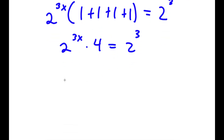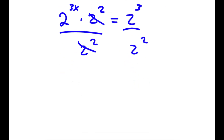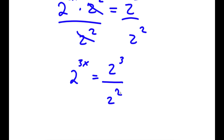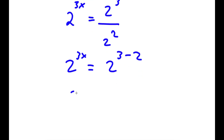Now, 4 is the same thing as 2 squared, and I can divide both sides by 2 squared. These two cancel out, so now I have 2 to the power of 3x is equal to 2 to the power of 3 over 2 to the power of 2. And 2 to the power of 3 divided by 2 to the power of 2 is equal to 2 to the power of 3 minus 2, which is equal to 2 to the power of 1.